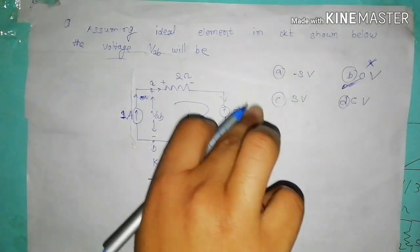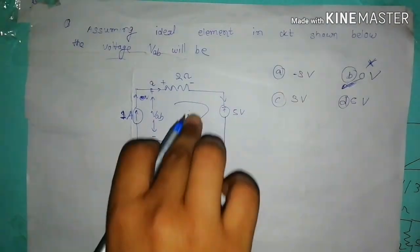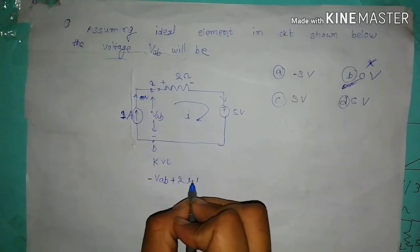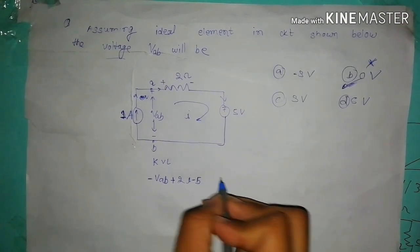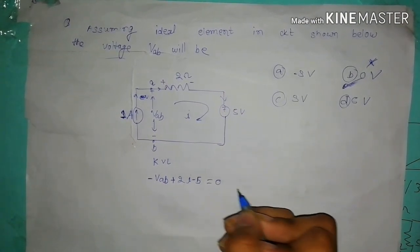Here is the voltage source and current entering in the negative side. That's why I take the negative sign. This is the rule of KVL, equal to 0.